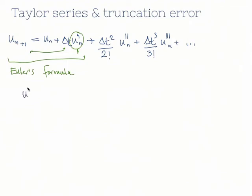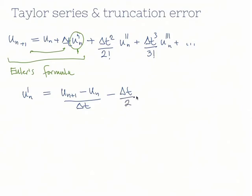We get u prime of n — which is basically the derivative of u with respect to time at time step n — is equal to u n plus 1 minus u n over delta t. This comes from u n plus 1 on the left hand side; subtract u n and all of that is divided by delta t. Then all the other terms move to the other side with a negative sign, divided by delta t, giving: minus delta t over 2 times u double prime n, minus delta t squared over 6 times u triple prime n, and so on.